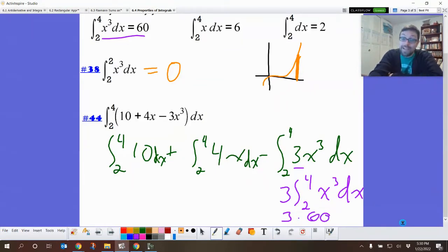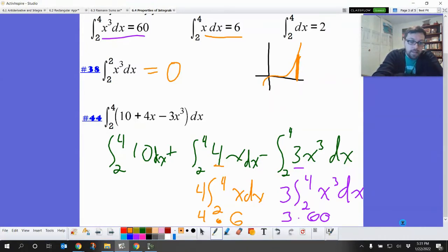Well, the integral from 4 to 2 of x cubed is 60. Somebody was kind enough to tell me that. Thanks, person who told me that. This one has a, I can do that same trick. I can take this 4 out. So this is the integral from 2 to 4 of x dx. But somebody was so kind to tell me what the integral from 2 to 4 of x dx was. It's 6. So this is just 4 times 6. Neat.